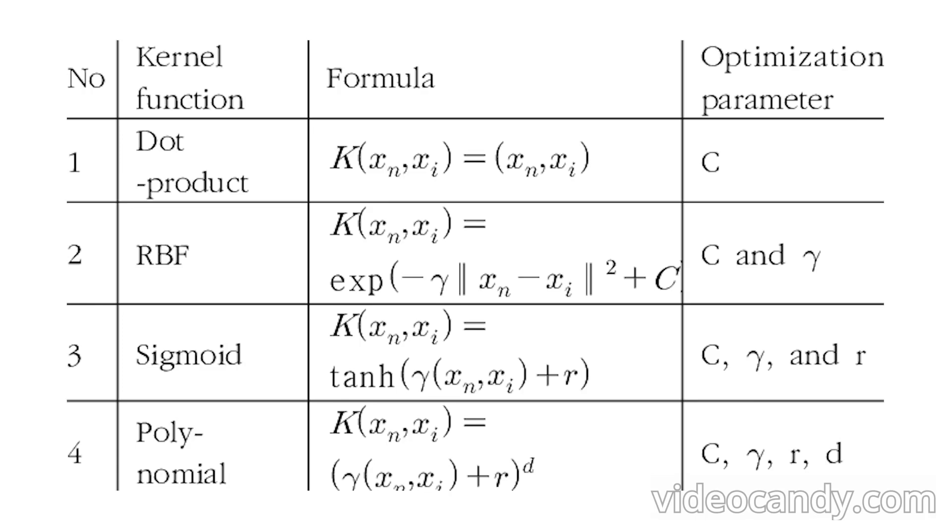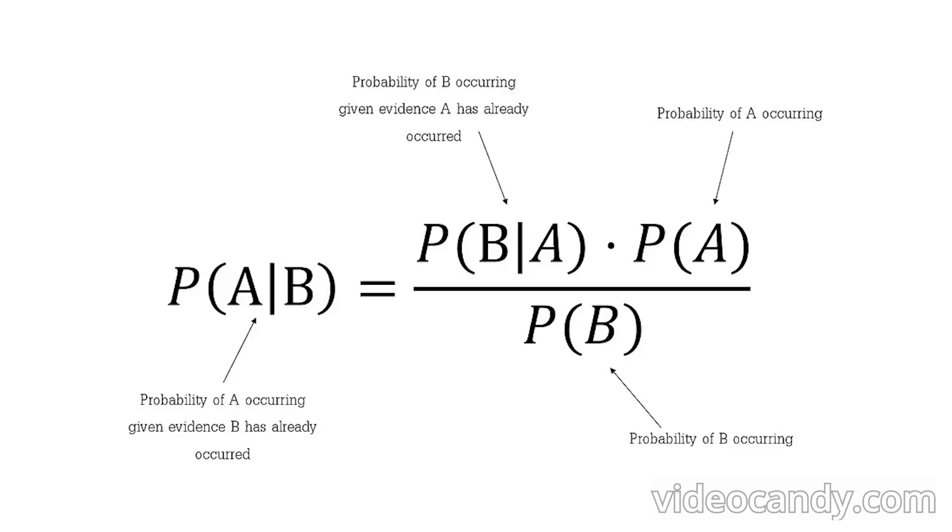Possible kernel functions for SVMs are the linear, the polynomial, the RBF, and the sigmoid kernel. Another fairly simple classifier is the naive Bayes classifier that gets its name from Bayes' theorem, which looks like this.